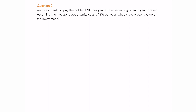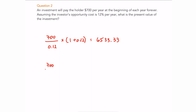Question number two: an investment will pay the holder $700 per year at the beginning of each year forever — so this is a perpetuity due because the payments are at the beginning of each year. The investor's opportunity cost is 12% per year. There are two ways to solve this: the first is to take the payment divided by the discount rate, then multiply by (1 + discount rate), giving $6,533.33. The other way is payment divided by discount rate, plus one payment — same answer. Pick whichever you prefer.